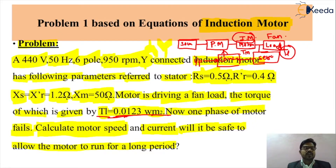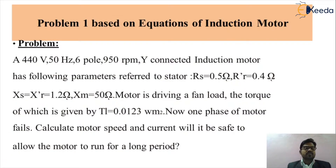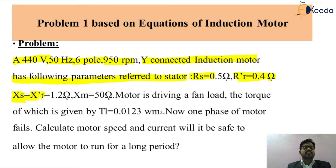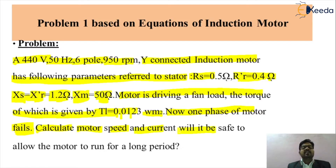To summarize the problem: a 440V, 50Hz, 6-pole, 950 RPM star-connected induction motor has RS = 0.5Ω, R'R = 0.4Ω (referred to stator), XS = X'R = 1.4Ω, XM = 50Ω. The motor drives a fan with load torque TL = 0.0123·ωm². One phase fails (single phasing). Find the motor speed, current, and whether it is safe for long-period operation.